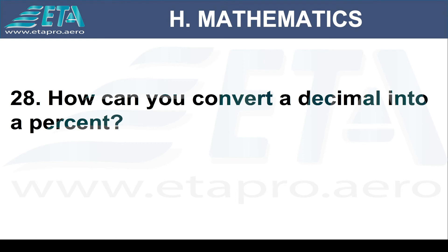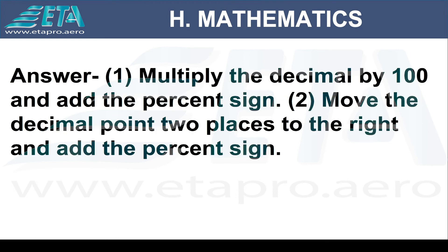How can you convert a decimal into a percent? First, multiply the decimal by 100 and then add the percent sign. Second, move the decimal point two places to the right and add the percentage sign.